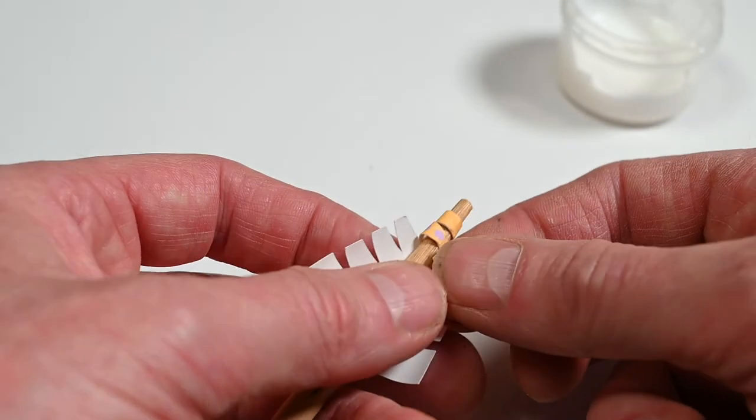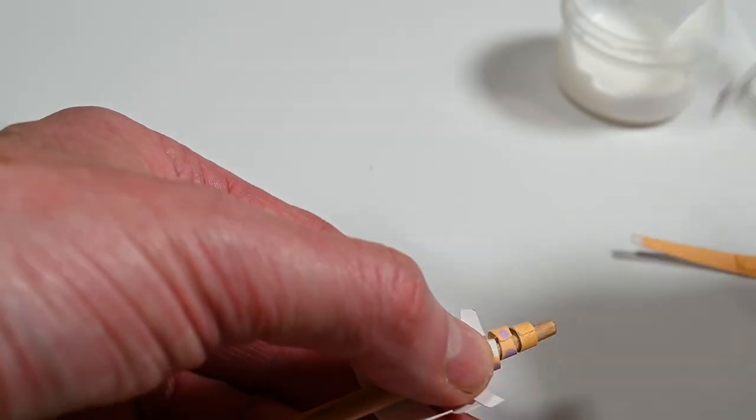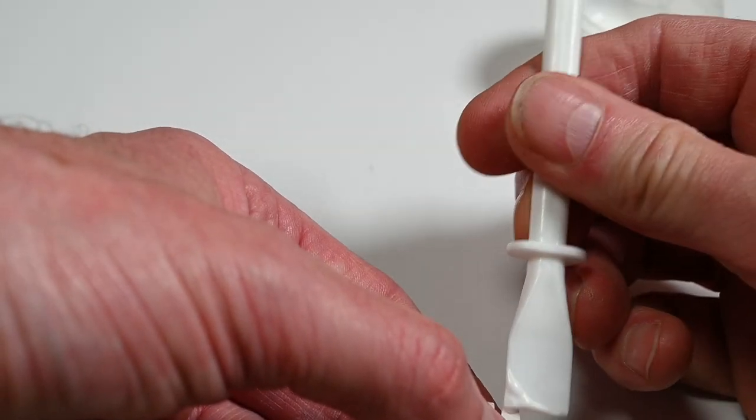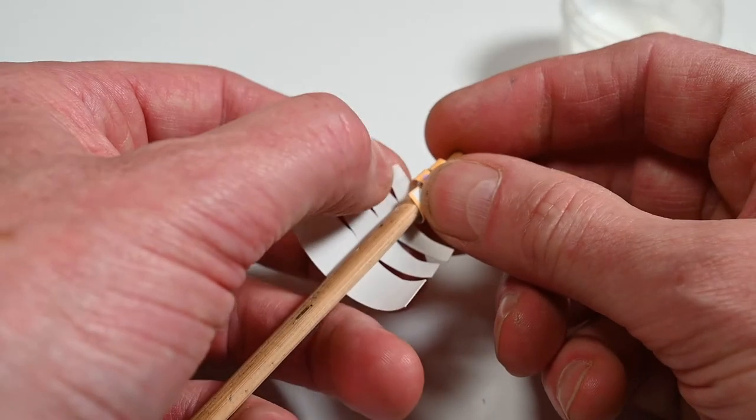It gets easier as you go along because they get larger and larger. Although none of them are massive. Obviously because this is a dinosaur that fits on the end of a clothes peg.